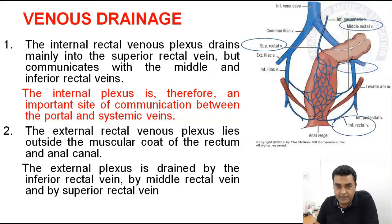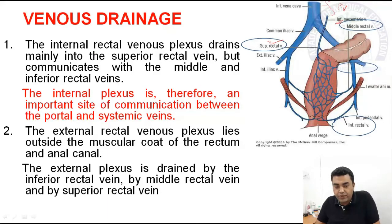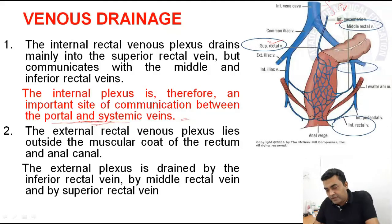Venous drainage: the superior rectal vein drains into the inferior mesenteric vein, which ultimately drains into the portal vein, forming a portocaval anastomosis. The internal venous plexus is therefore an important site of communication between the portal and systemic circulation. The external rectal venous plexus is drained by the inferior rectal vein, the middle rectal vein, and the superior rectal vein.